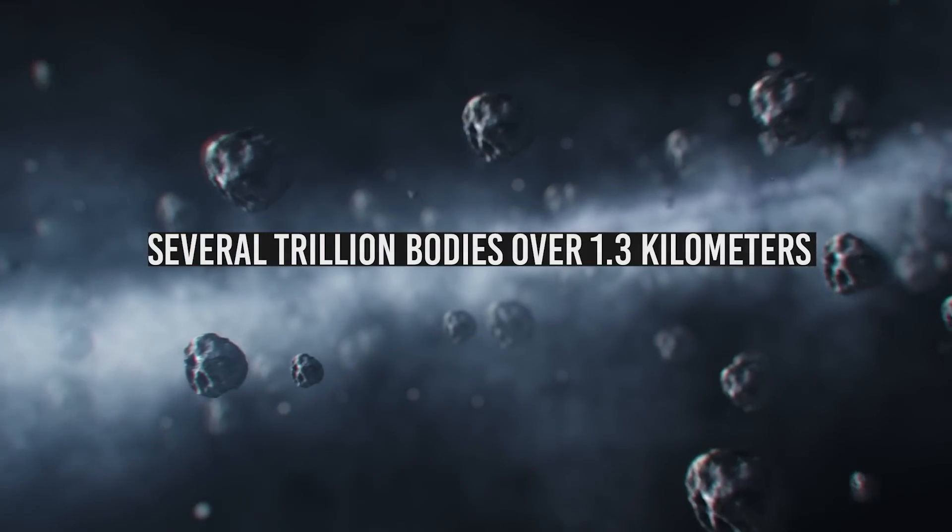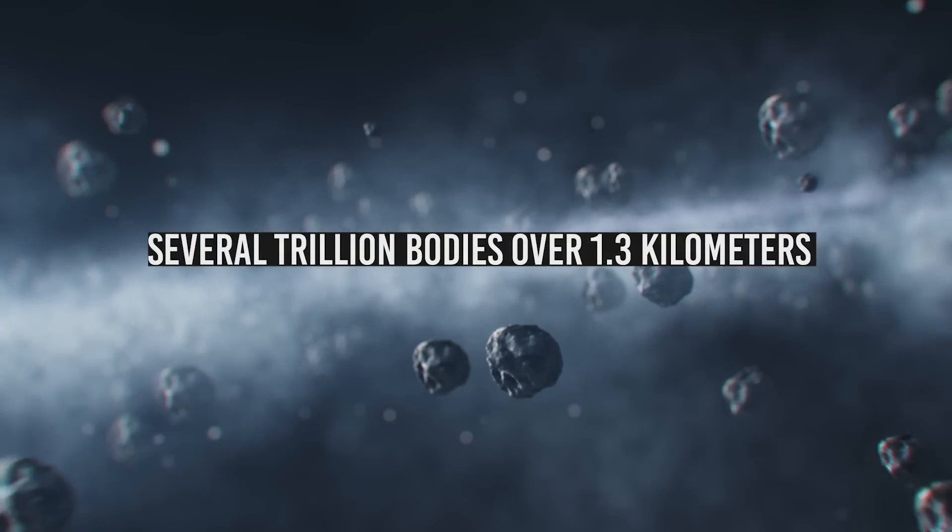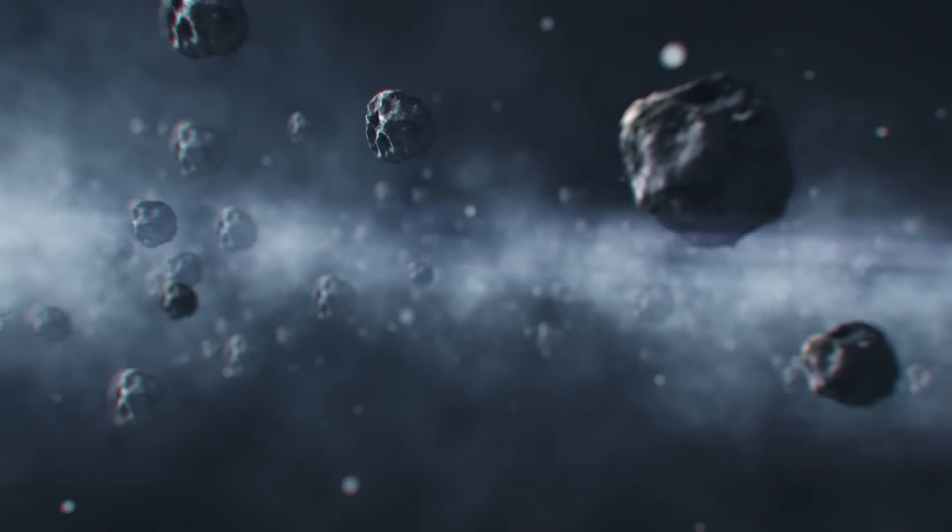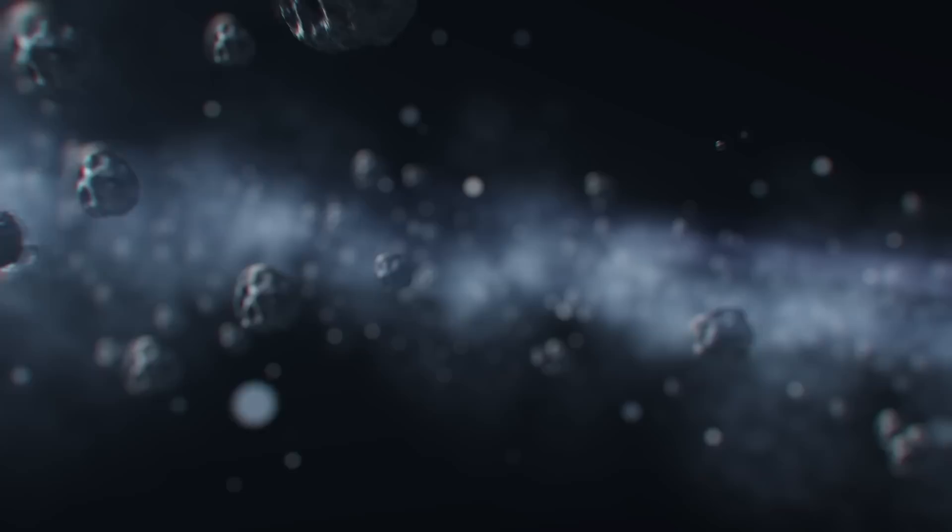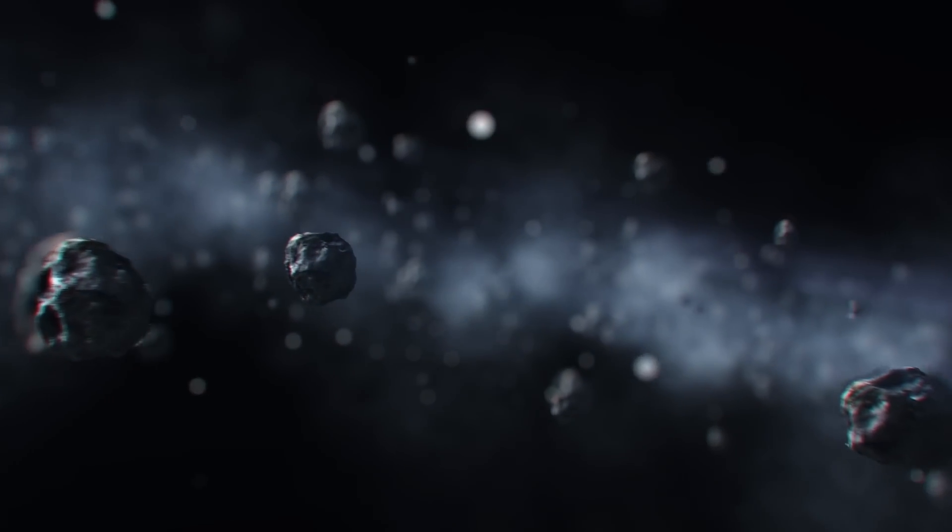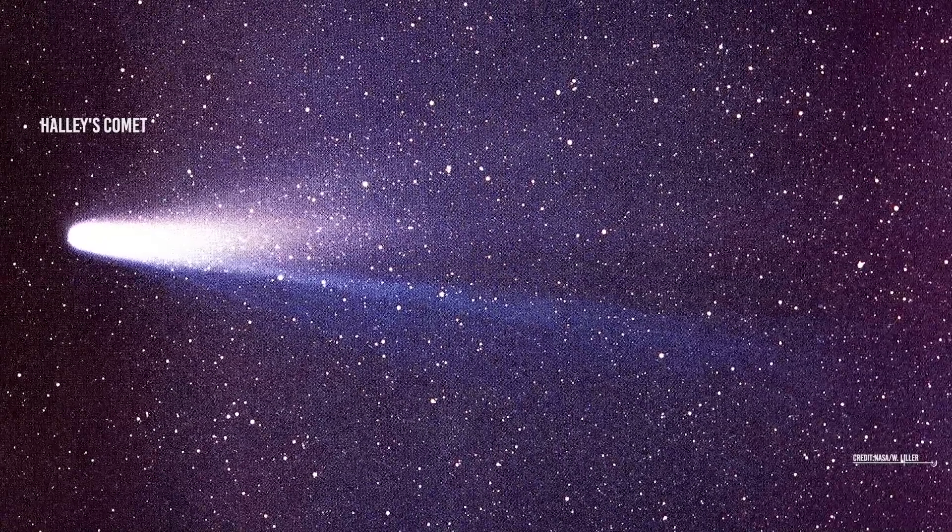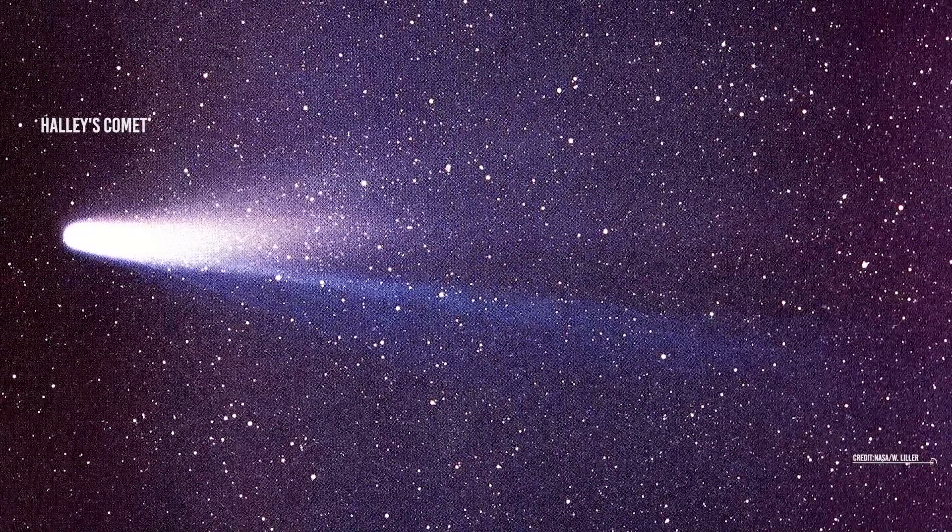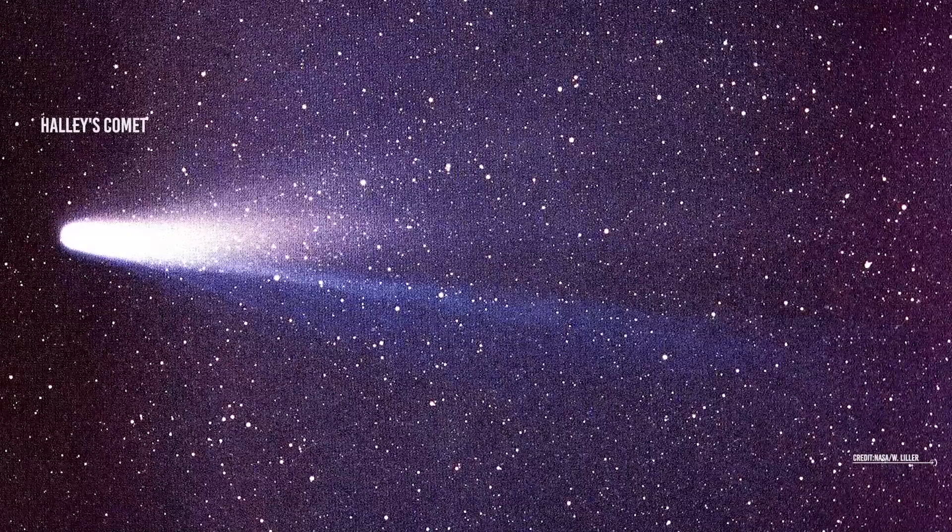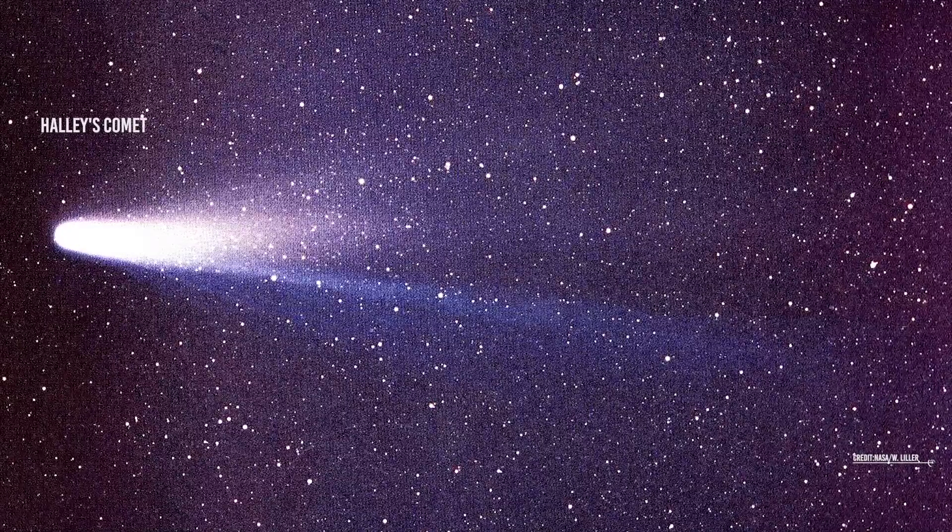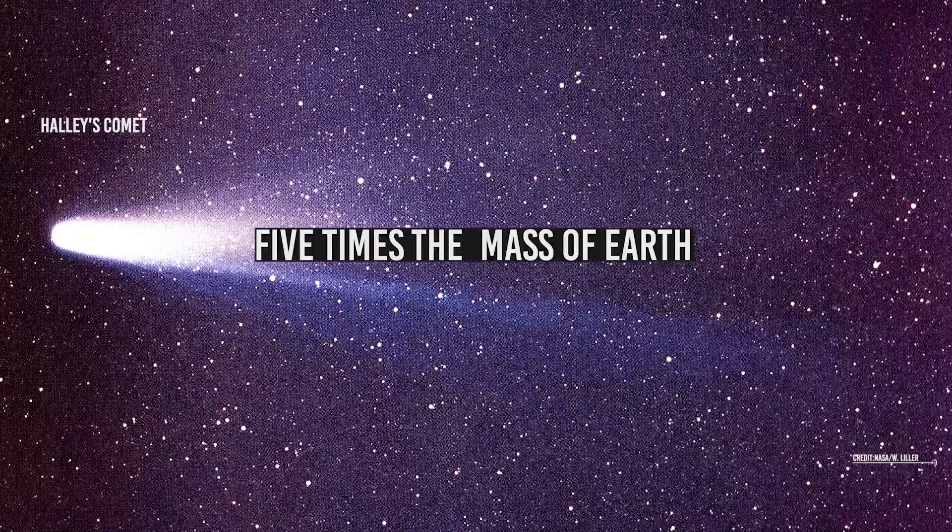It is believed that the Oort cloud may host several trillion bodies over 1.3 kilometers in diameter. Despite the high number of bodies, each would be separated by several tens of millions of kilometers from the nearest one, so it is almost impossible for any of the Voyager spacecraft to collide with any of these bodies. The mass of the Oort cloud is not known for sure, but if Halley's Comet is taken as a prototype outer cloud object, it is estimated that the mass would be 3 times 10^25 kilograms, that is, 5 times the mass of Earth.